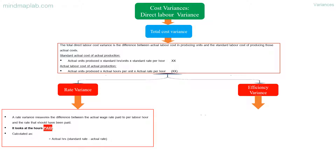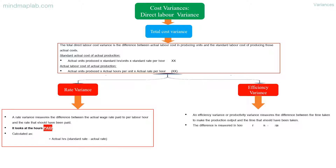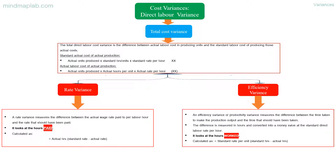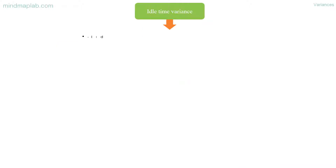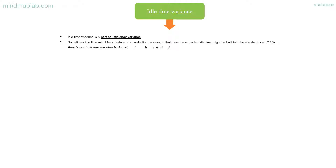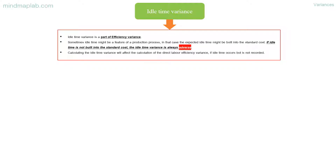Efficiency variance (or productivity variance) measures the difference between the time taken to make the production output and the time that should have been taken. The difference is measured in hours and converted into a money value at the standard direct labor rate per hour. It looks at the hours worked and is calculated as: standard rate per unit multiplied by the difference between standard hours and actual hours. Idle time variance is a part of efficiency variance. Sometimes idle time might be a feature of a production process; in that case the expected idle time may be built into the standard cost. If idle time is not built into the standard cost, the idle time variance is always adverse. Calculating the idle time variance will affect the calculation of the direct labor efficiency variance if idle time occurs but is not recorded.